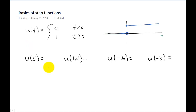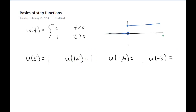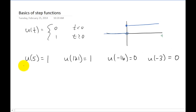This often seems fairly trivial to students, but I always like to ask the question: what is u of pi? Well, a step function can only have two values — zero and one. Because our t value is positive, it's greater than or equal to zero, our step function has a value of one. Whenever the argument inside of your step function is a negative number, the value of the step function is just going to be zero. Every u means the same thing: if the argument is positive, the value is one; if negative, the value is zero.